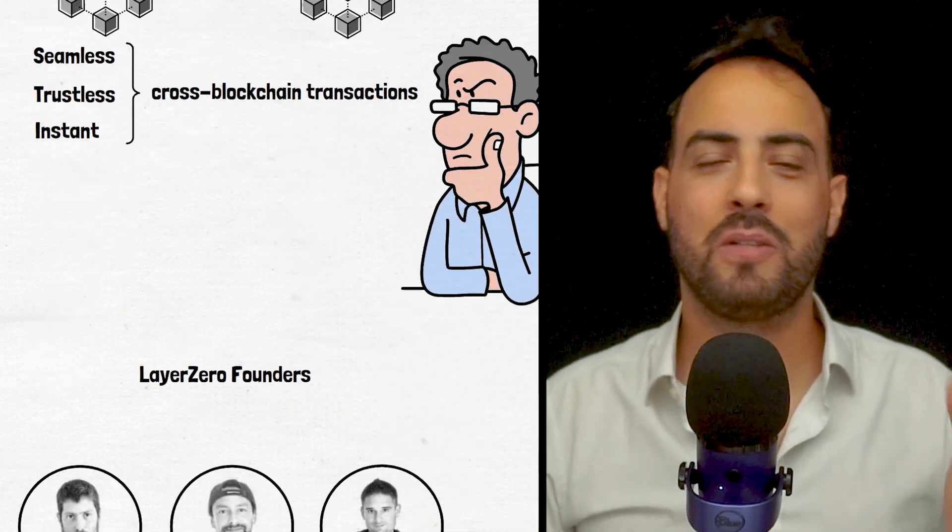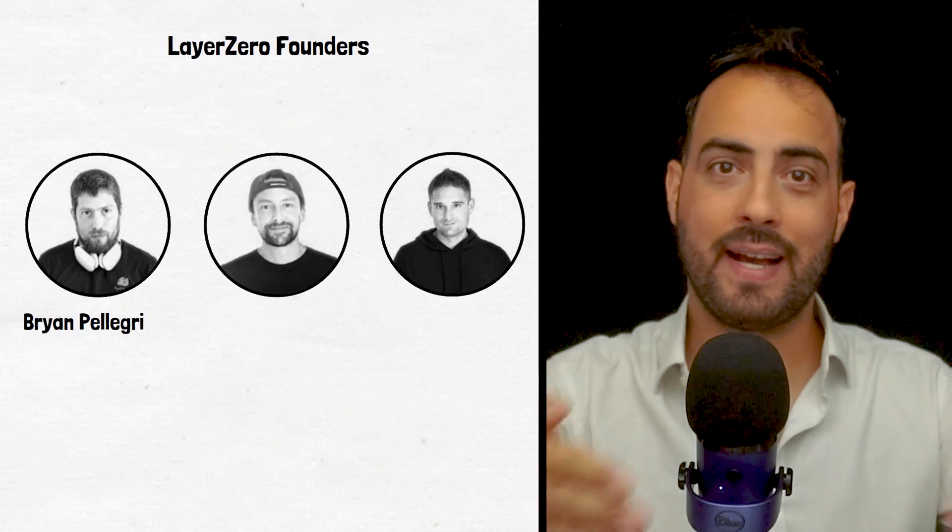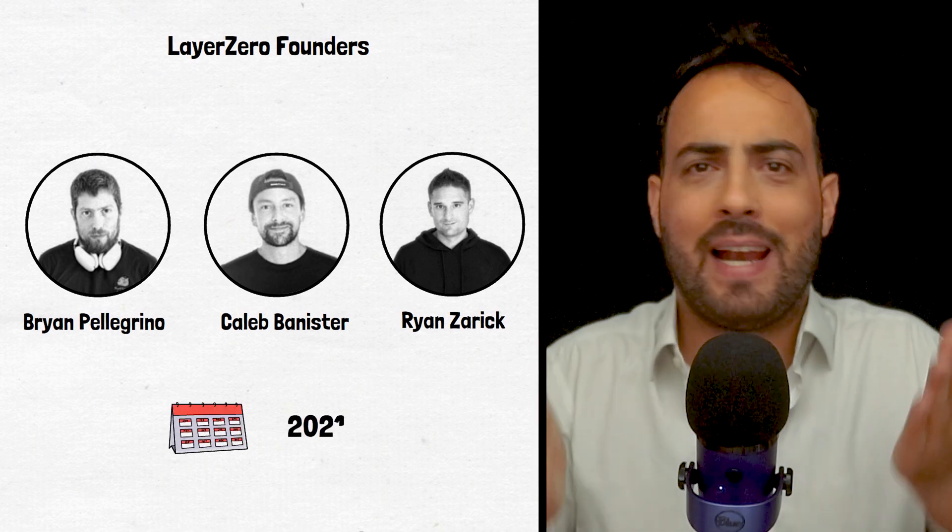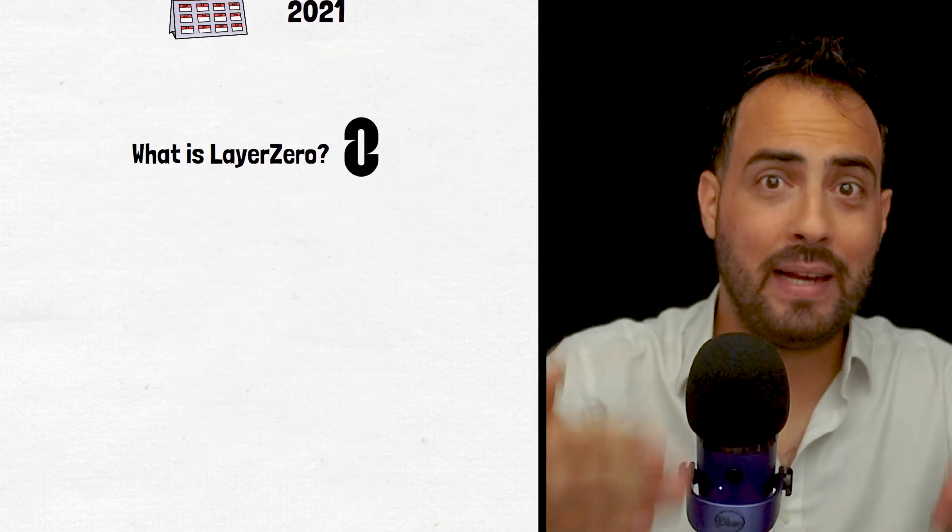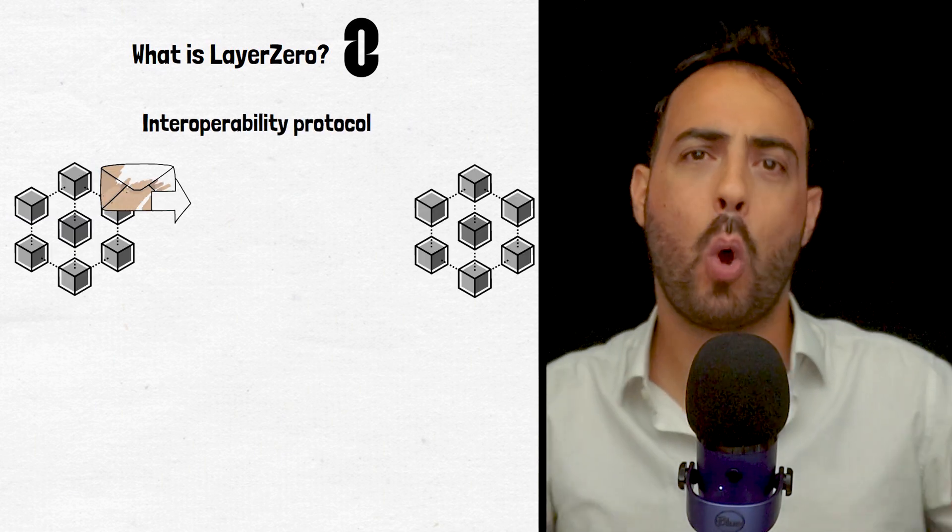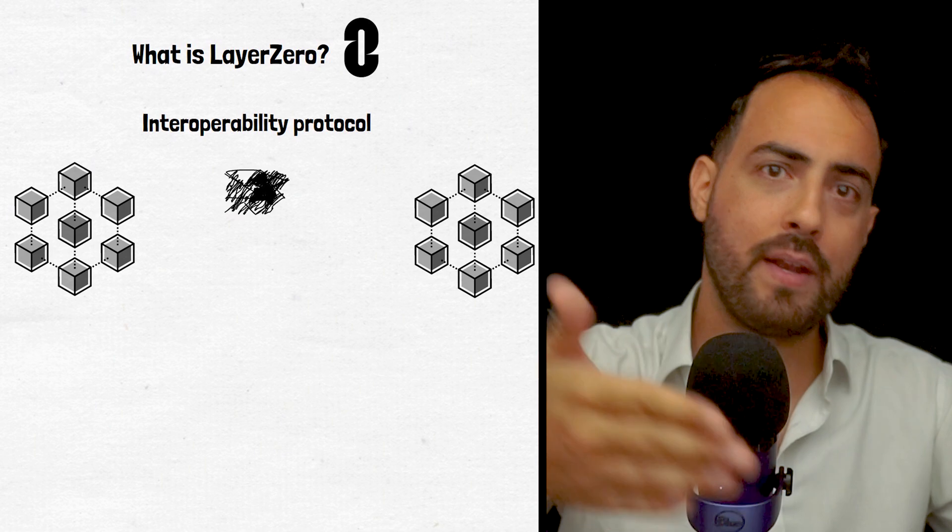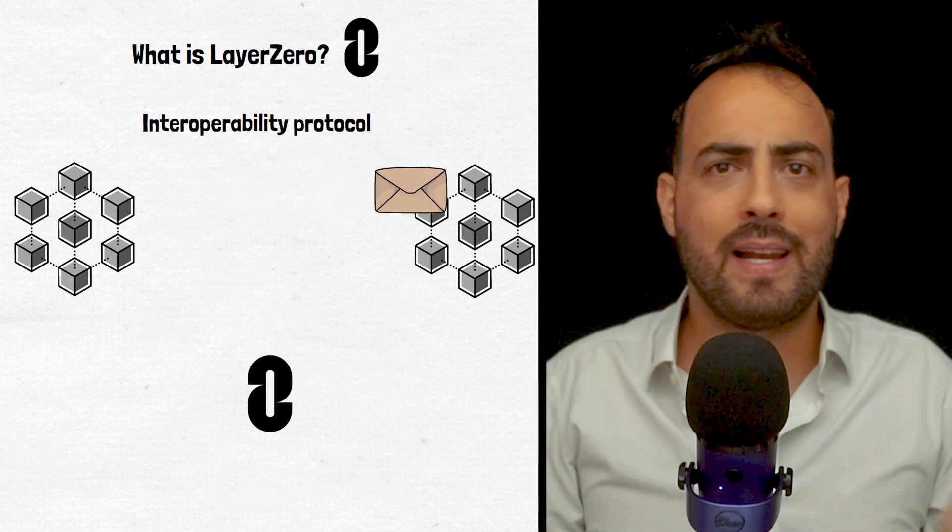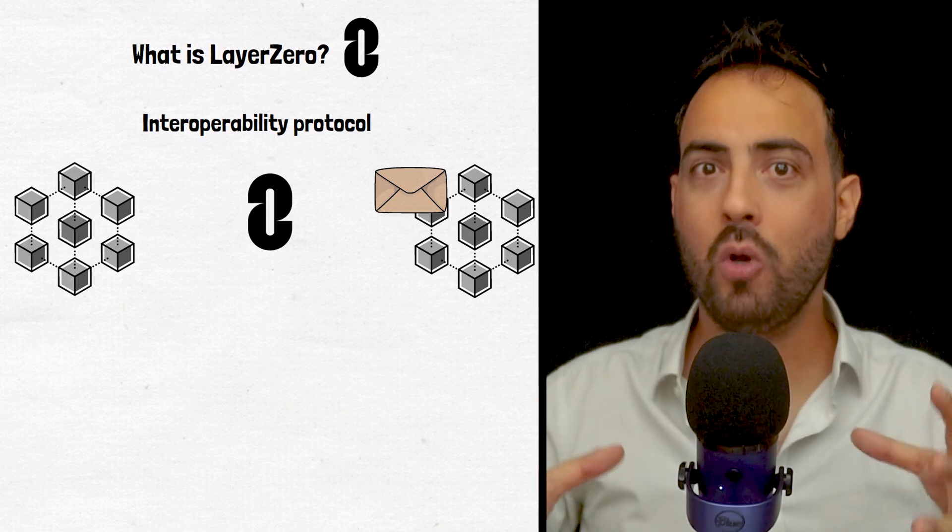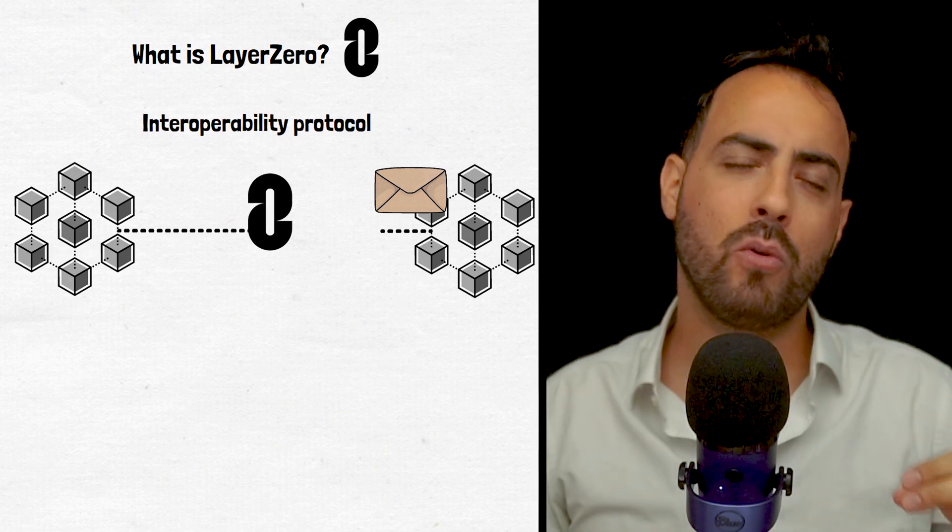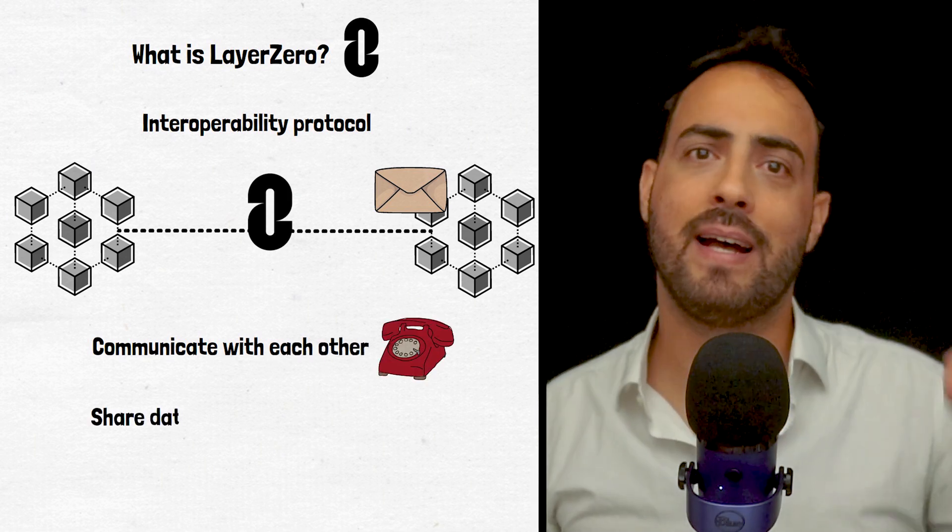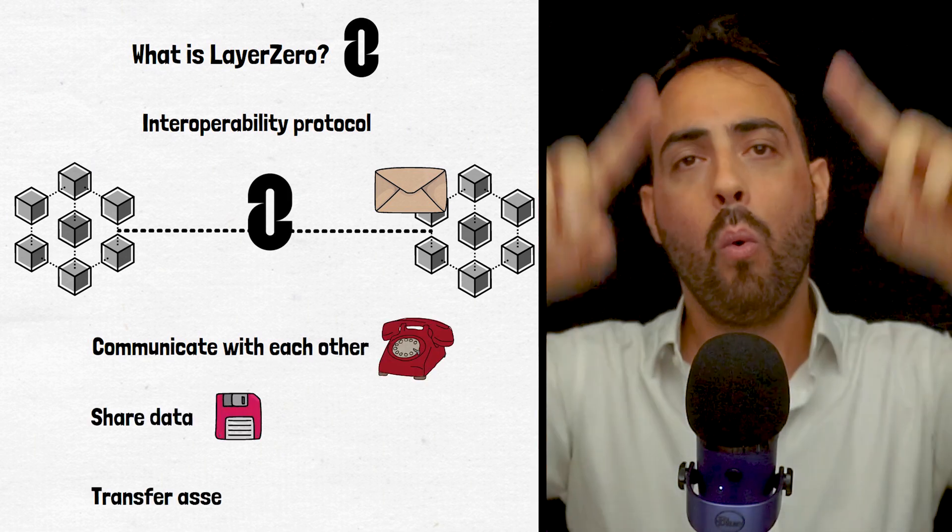Layer 0 was founded by Brian, Caleb and Ryan in 2021. At its core, Layer 0 is an interoperability protocol that transfers messages from user applications on one blockchain network to another. This means Layer 0 isn't a blockchain itself, but rather is a protocol that allows different blockchain networks to communicate with each other, share data and transfer assets as if they were all one blockchain.